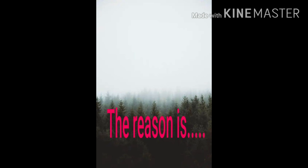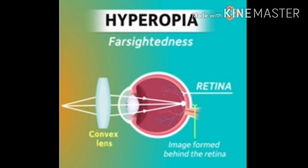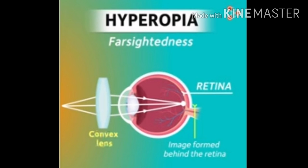This defect arises because the focal length of the eye lens is too long, or the eyeball has become too small. A convex lens with appropriate power is used to correct this defect. We can identify the difference between myopia and hypermetropia from this picture: a concave lens rectifies the myopic eye and a convex lens rectifies the hypermetropic eye.